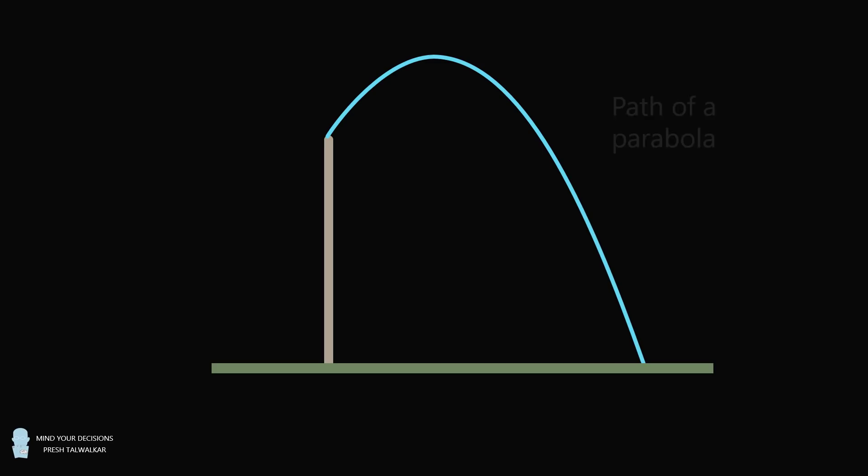Hey, this is Preshta Walker. A park contains a water fountain that sprays water in the path of a parabola.